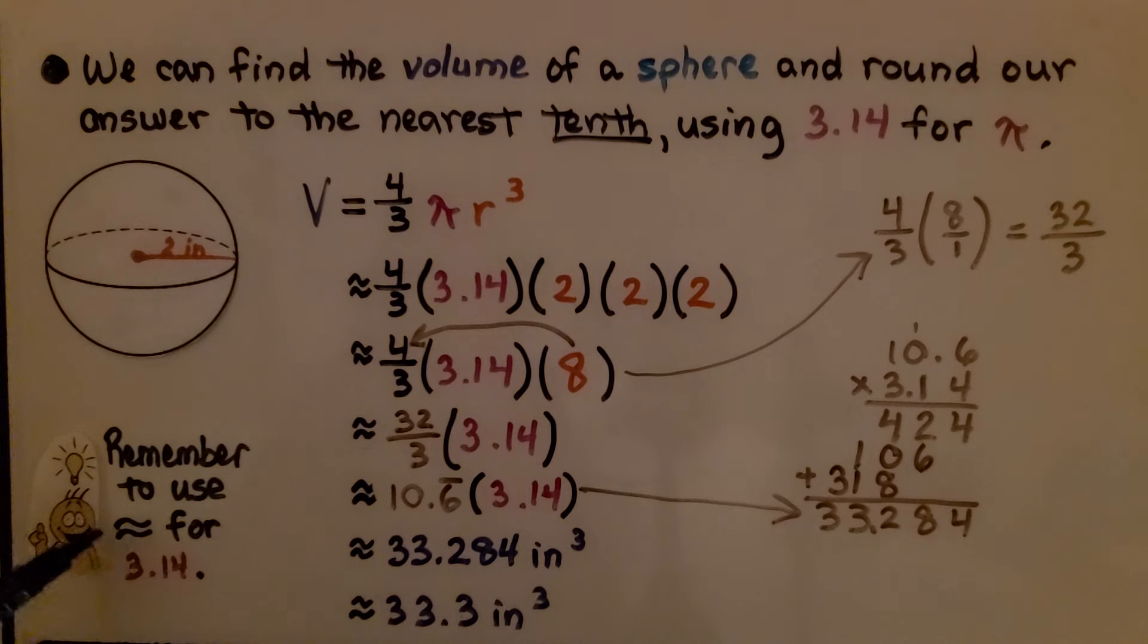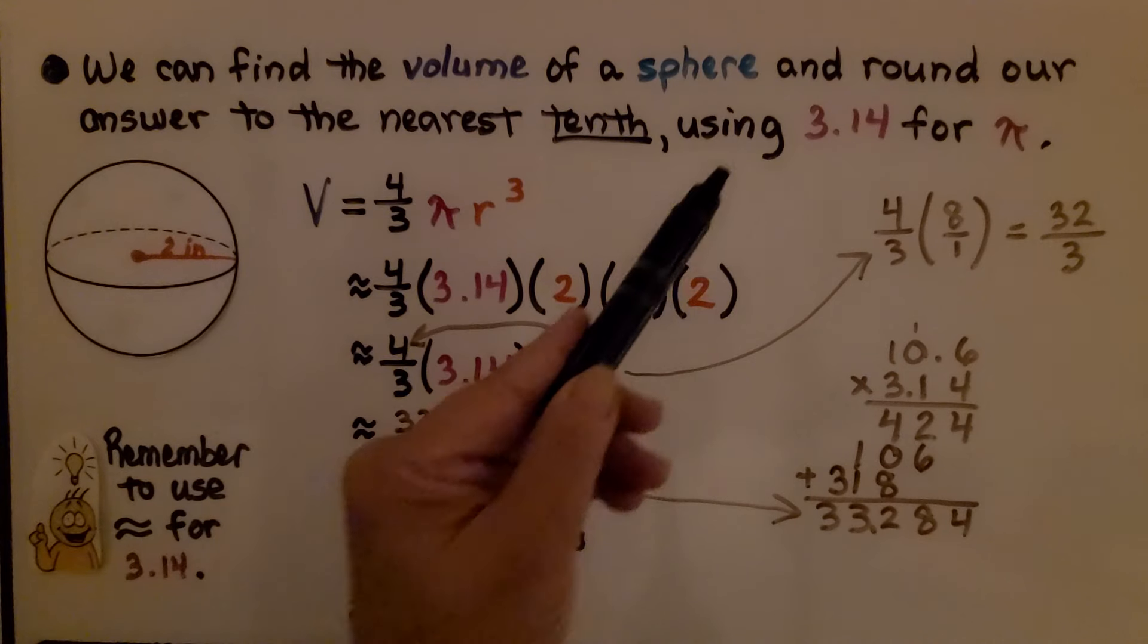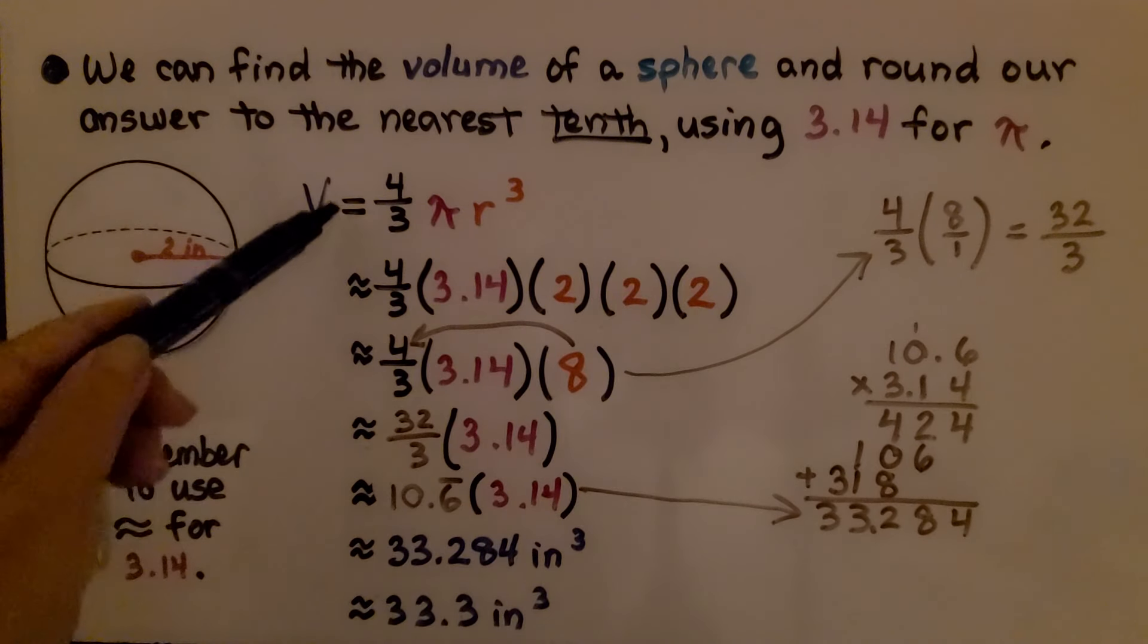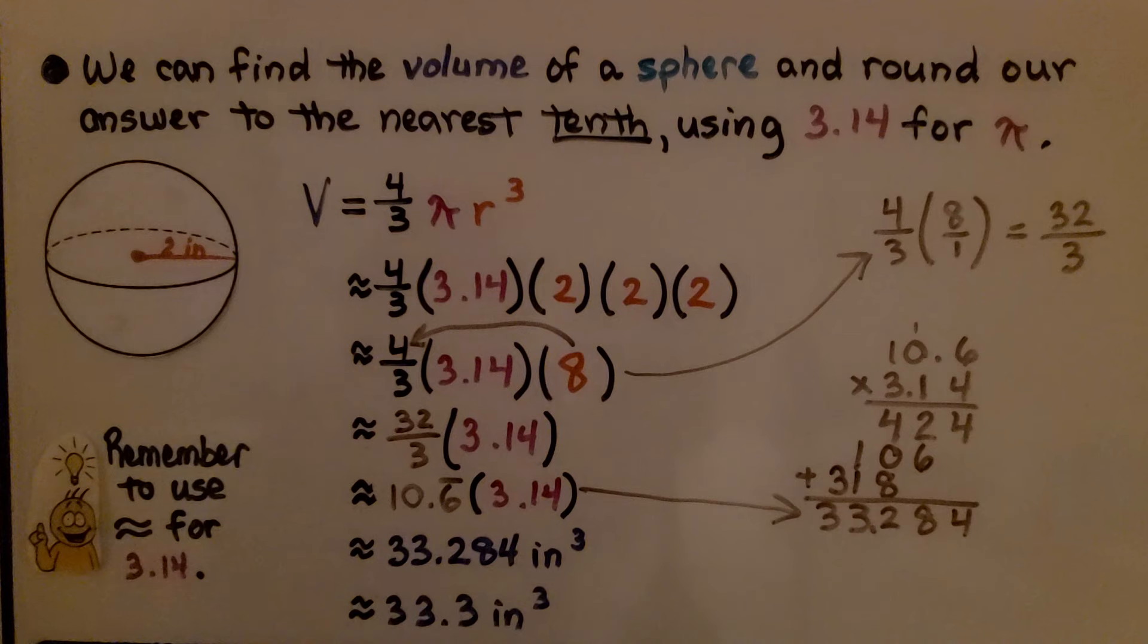Remember to use the approximation symbol when you're using 3.14. We don't need to use it when we're actually using the symbol for pi, but since it's telling us to use 3.14, we have to switch to that approximation symbol coming all the way down.